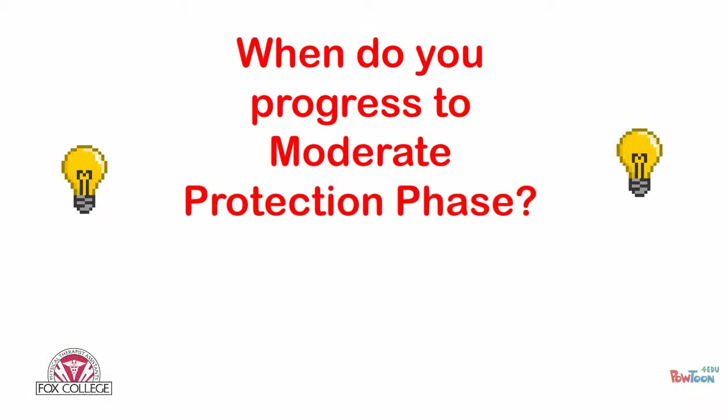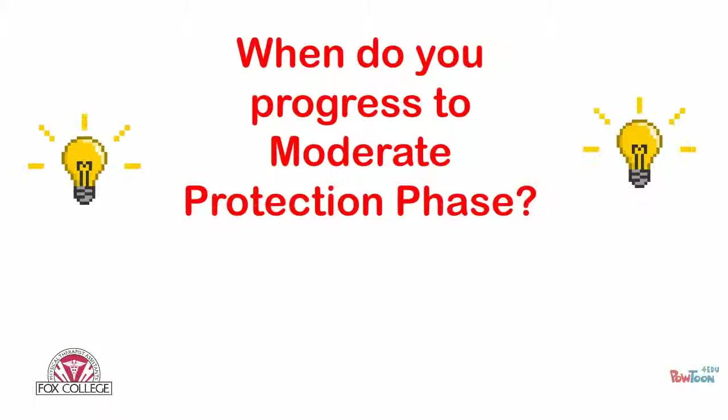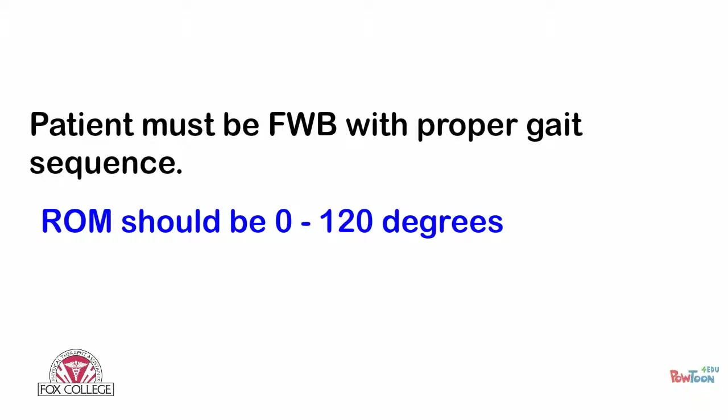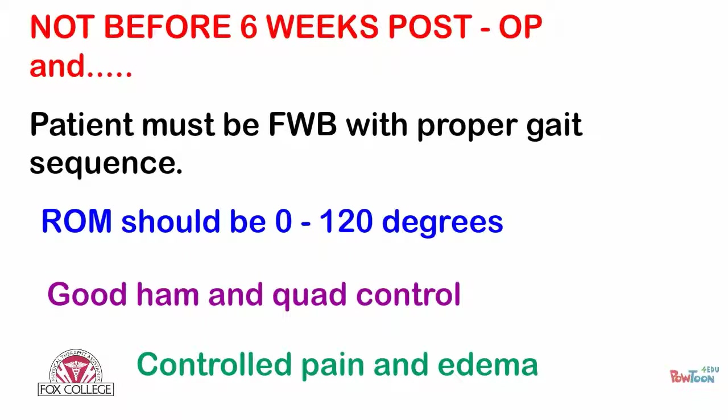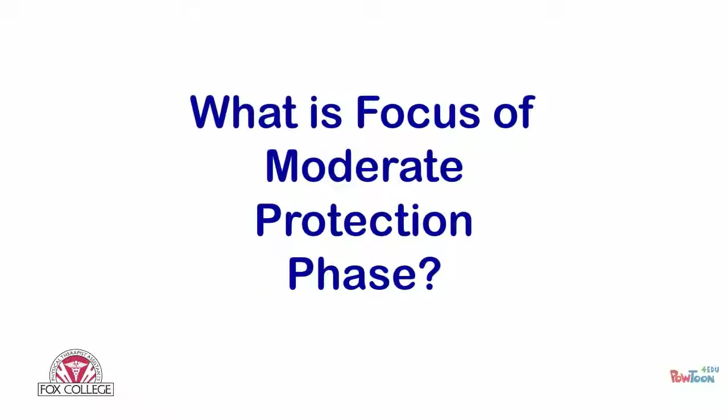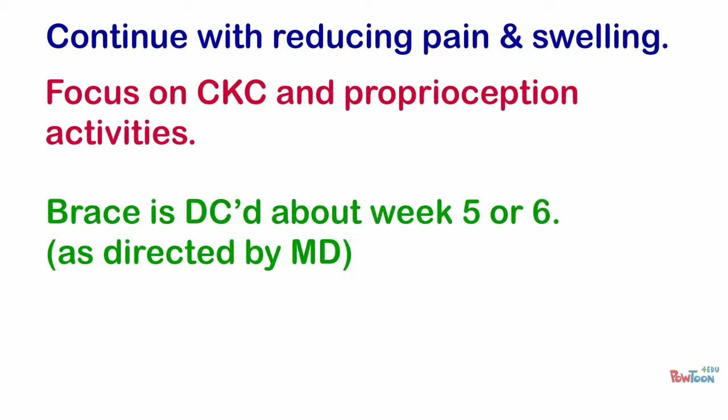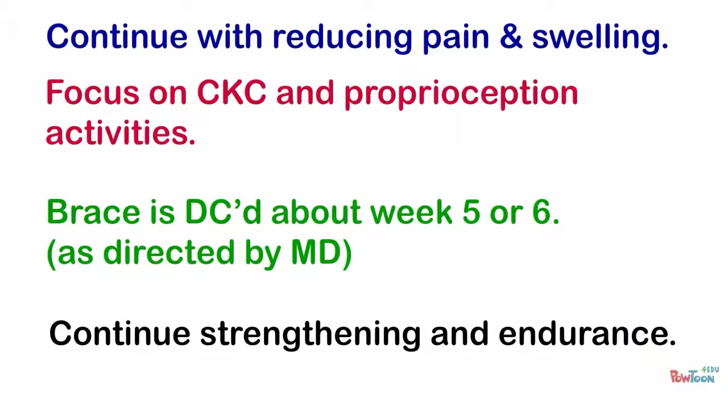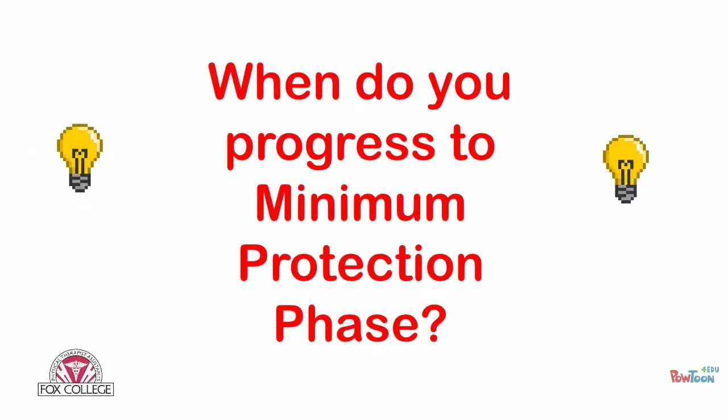To progress to the moderate protection phase, the patient must be full weight-bearing with proper gait sequencing, range of motion should be 0 to 120 degrees, with good hamstring and quad control and controlled pain and edema. During the moderate protection phase, continue with reduction in pain and swelling, focus on closed kinetic chain and proprioception activities, the brace can be discontinued around 5 to 6 weeks as directed by MD, and maintain controlled strengthening.